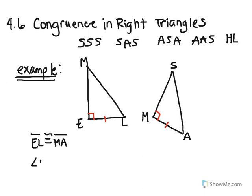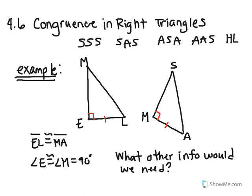I also know that angle E is congruent to its corresponding part, which is angle M. And, those are equal to 90 degrees because that's what a right angle means. Let's say I wanted to prove that these two triangles are congruent. What other information would we need to prove that these two triangles are congruent by hypotenuse leg?